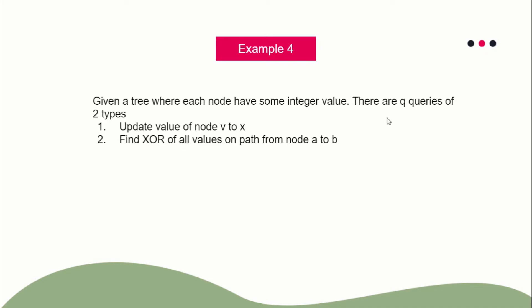Now you might be thinking: since we are applying segment trees, isn't this the same as HLD (Heavy Light Decomposition)? The answer is no — we don't have to apply heavy light decomposition here. Without HLD, we can actually solve this problem. You don't even need a segment tree; you can directly apply a Fenwick tree, which is much easier to work with and uses only linear space. So yes, these are the types of problems we can solve using Fenwick tree, segment tree, or prefix sums on trees to answer path or subtree queries.